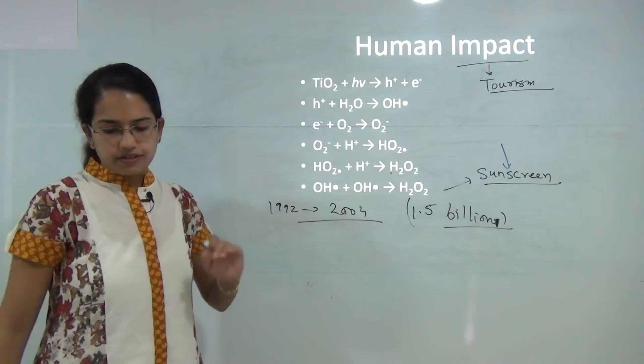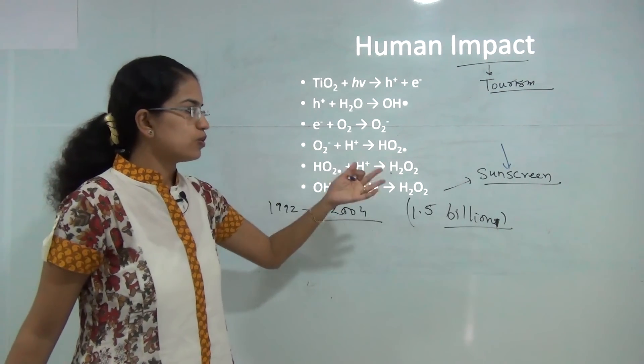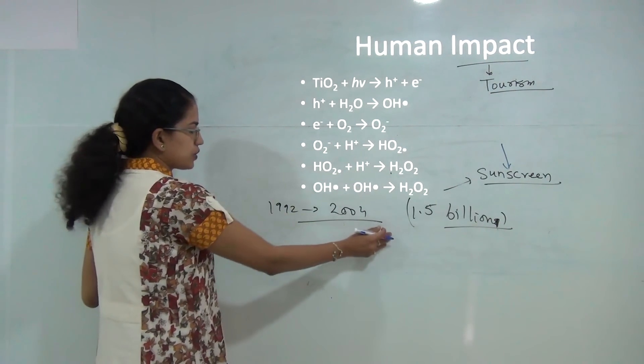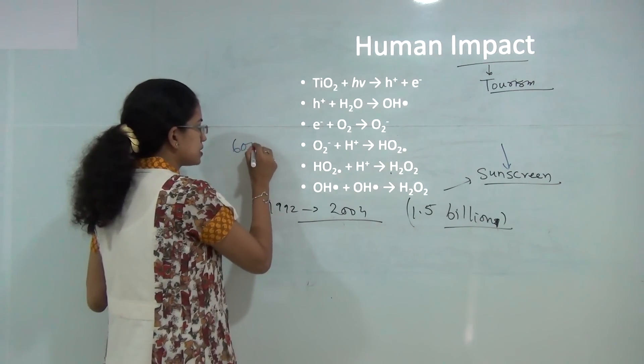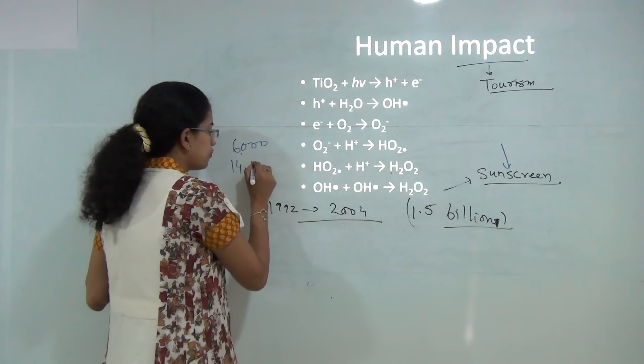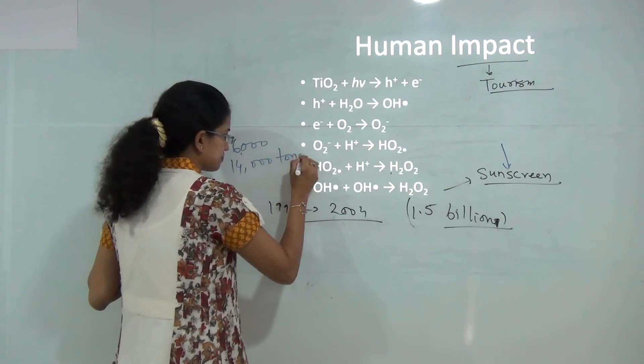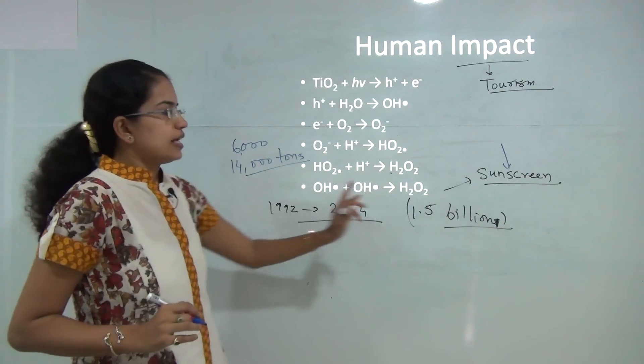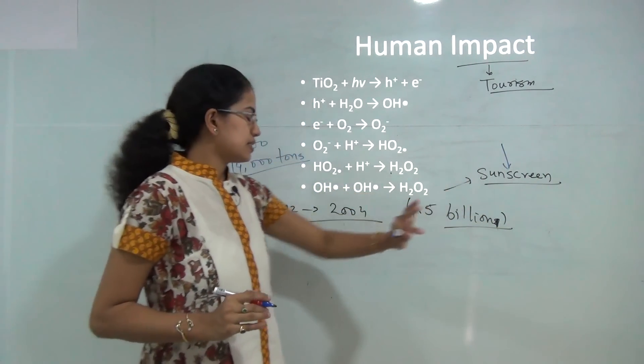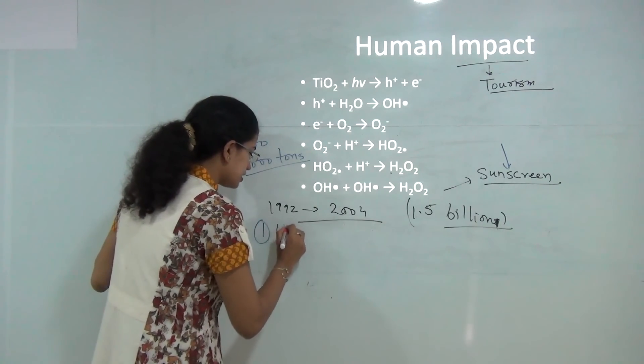This sunscreen, the amount of sunscreen that is disposed out into the ocean during this period increased from 6,000 tons to 14,000 tons. There are two major things under the sunscreen. First is the ultraviolet filters.